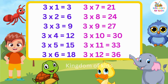Let's try once again. Three eights are twenty-four. Three nines are twenty-seven. Three tens are thirty. Three elevens are thirty-three. Three twelves are thirty-six.